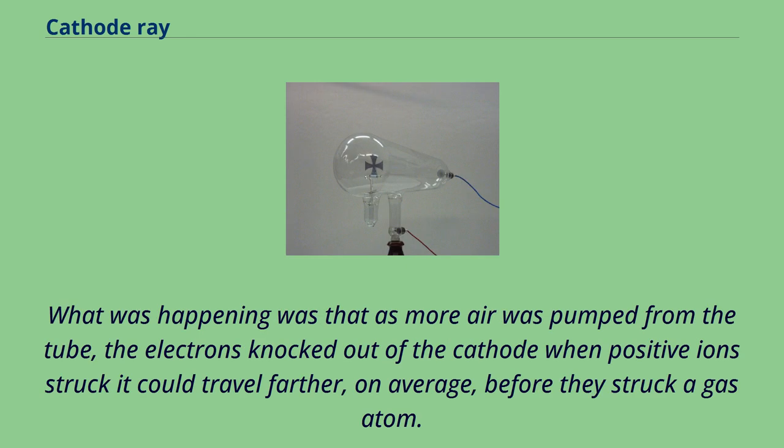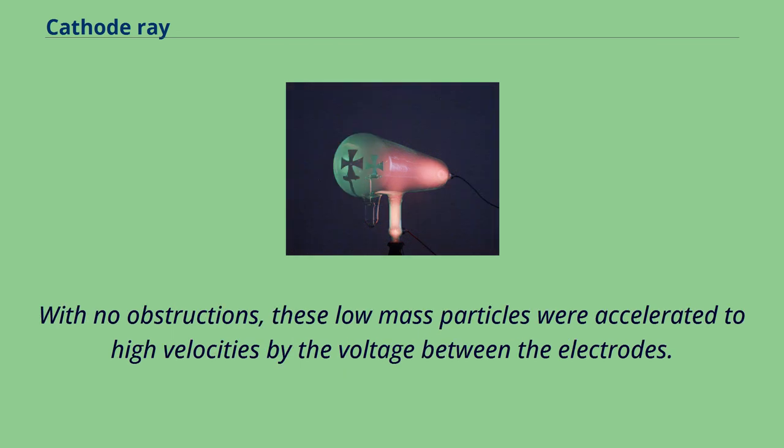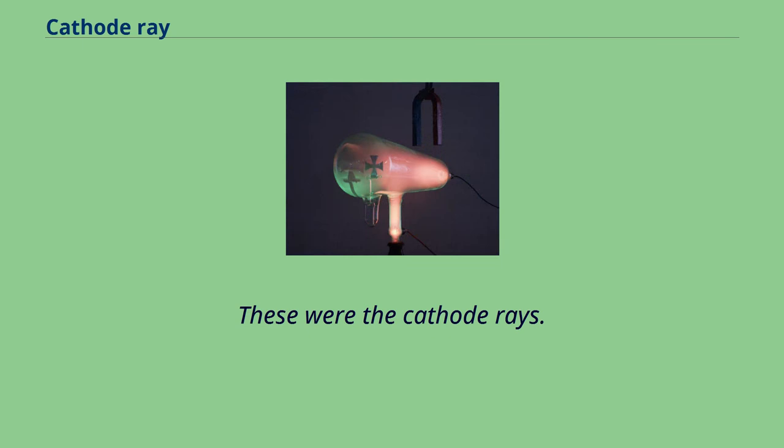What was happening was that as more air was pumped from the tube, the electrons knocked out of the cathode when positive ions struck it could travel farther, on average, before they struck a gas atom. By the time the tube was dark, most of the electrons could travel in straight lines from the cathode to the anode end of the tube without a collision. With no obstructions, these low-mass particles were accelerated to high velocities by the voltage between the electrodes. These were the cathode rays.